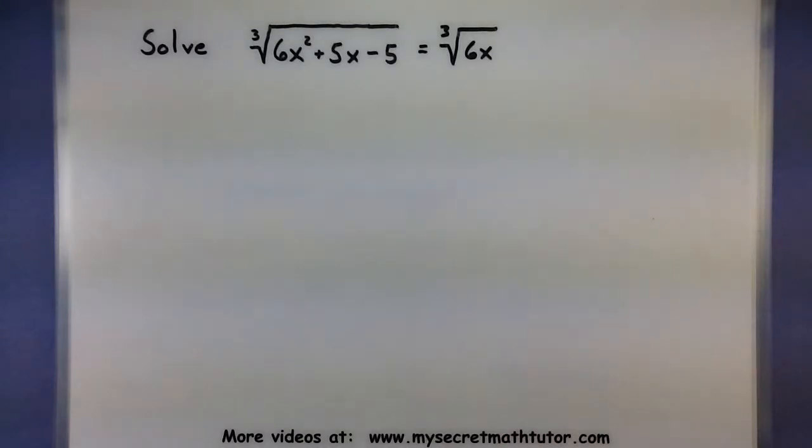In this next one, we want to solve the cubed root of 6x squared plus 5x minus 5 is equal to the cubed root of 6x. Okay, so notice this one, we want to get rid of these cubed roots.